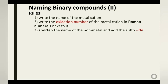Now let's look at naming Type 2 binary compounds. There are three rules. First, write the name of the metal cation followed by its oxidation number in Roman numerals in parentheses next to it. Finally, shorten the name of the non-metal and add the suffix '-ide'. The shortened form is taken from the root name of the non-metal.